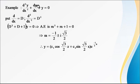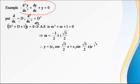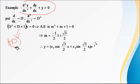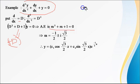Let us solve Example 1: d²y/dx² + dy/dx + y = 0. First, convert to operator form by substituting d/dx = D and d²/dx² = D². This gives (D² + D + 1)y = 0. Setting f(D) = 0 gives the auxiliary equation: m² + m + 1 = 0. This is a quadratic equation, so we use the formula: m = (−b ± √(b² − 4ac)) / 2a.